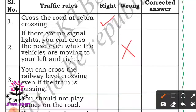First, you have to see whether vehicles are moving to your left and right. Third: you can cross the railway level crossing if the train is passing - this is dangerous, so it is a big no. You cannot cross the railway level if the train is moving. Fourth: you should not play games on the road - this is correct. We have to play games in the playground, not on the road.